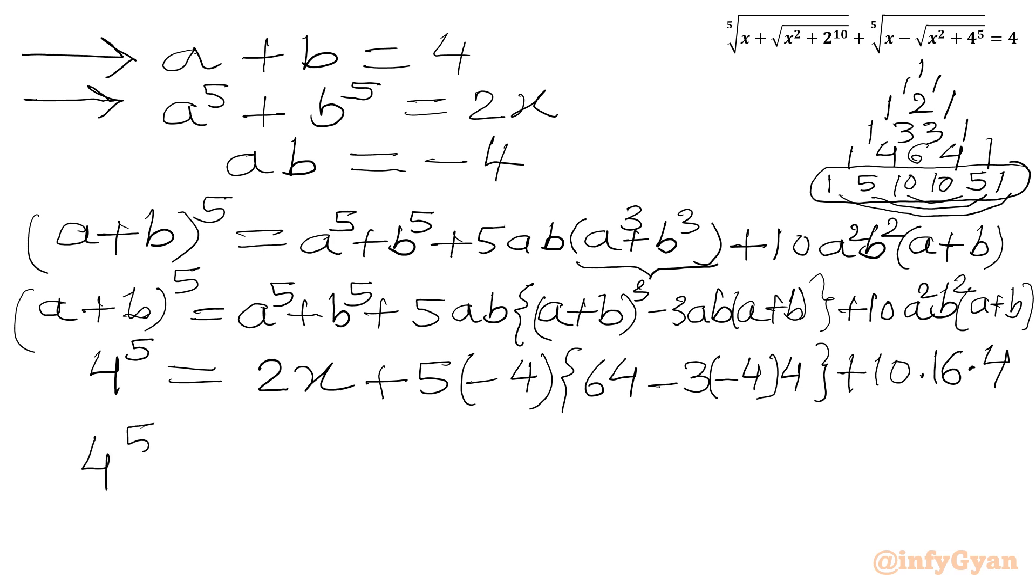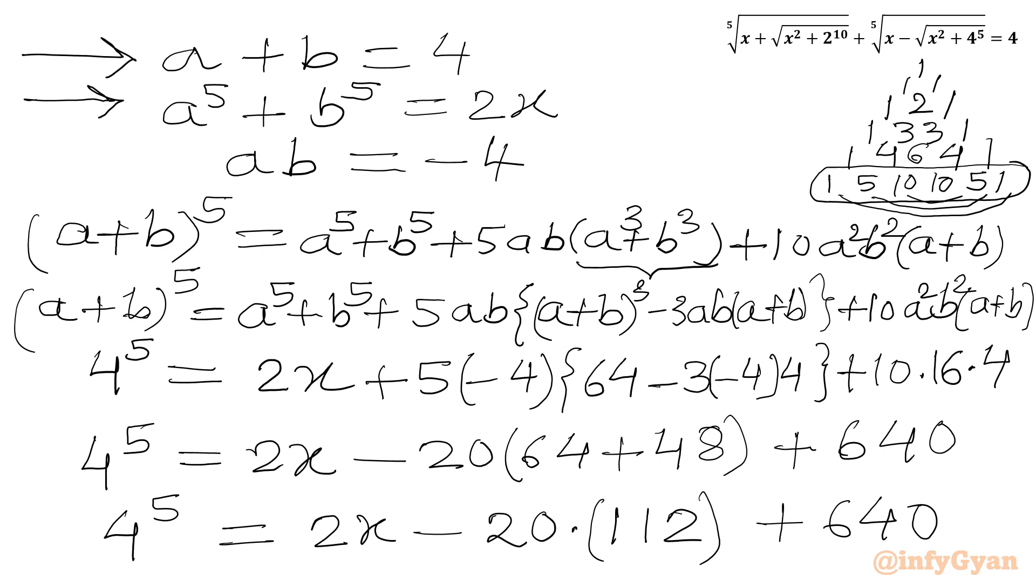Now I can write 4 power 5 will be equal to 2x minus 20 in the bracket 64 plus 4 times 4, 16 times 3, 48 plus 16 times 4, 64, so 640. Or we can write 4 power 5 equal to 2x minus 20 times 64 plus 48, 112 plus 640.